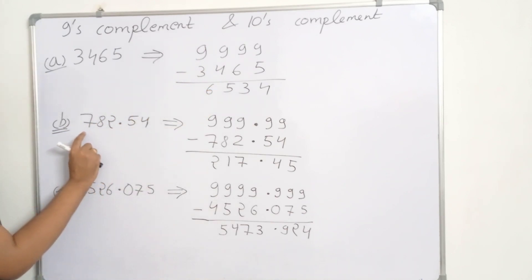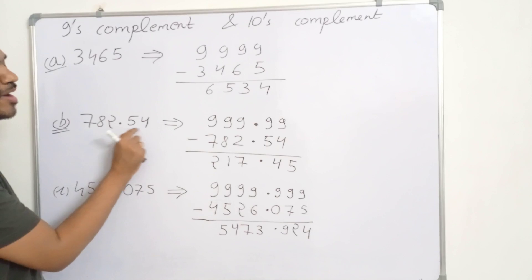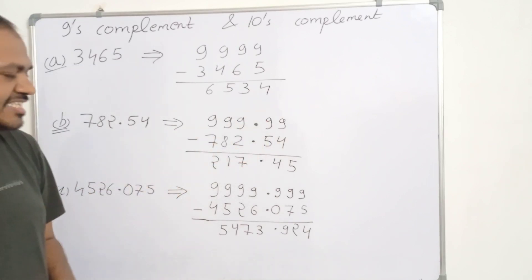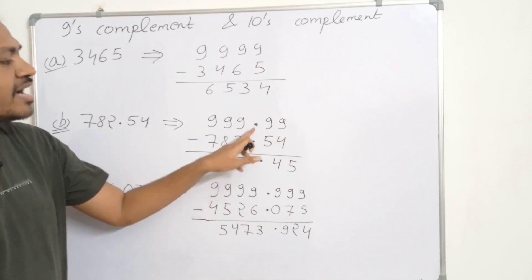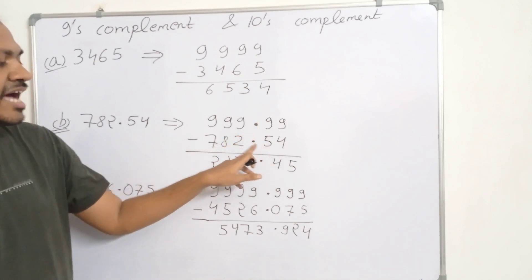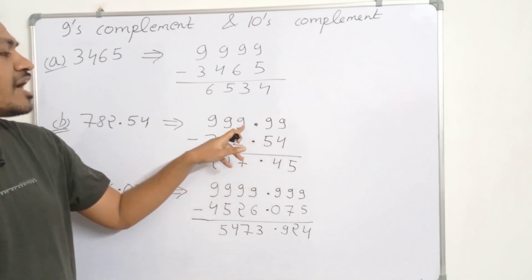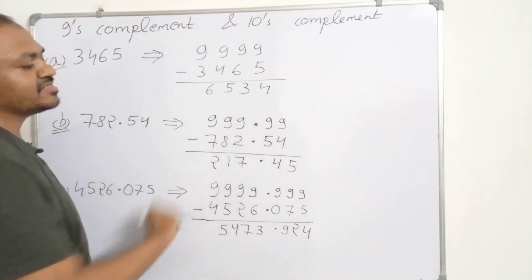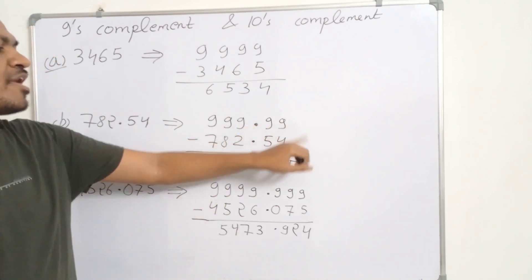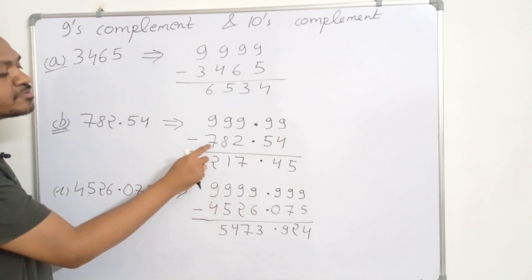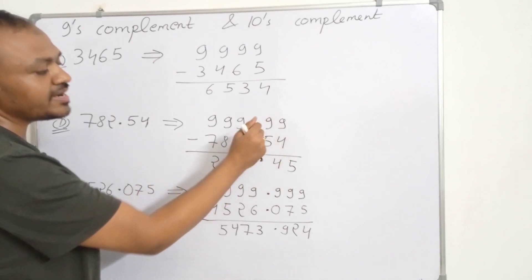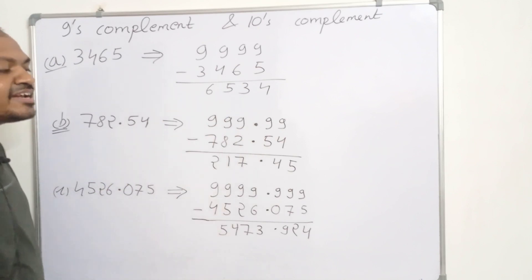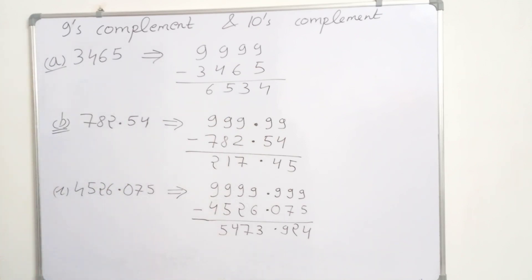Similarly, for the number 782.54, subtract 9 from all the digits. After the decimal point there are 2 digits, so we also take two 9's after the point. That means for every digit we take a 9, and the decimal place will remain the same.